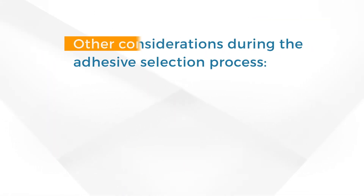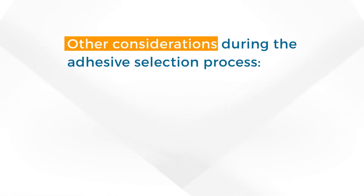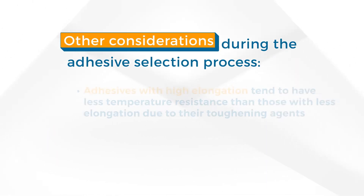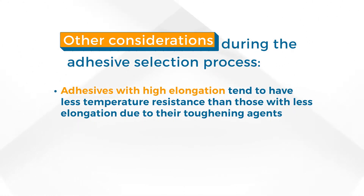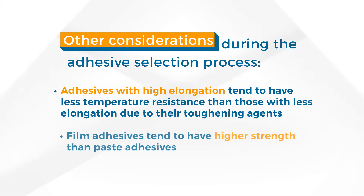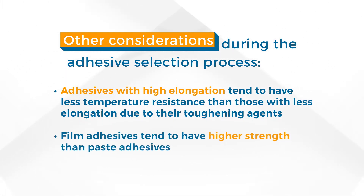Other considerations during the adhesive selection process: adhesives with high elongation tend to have less temperature resistance than those with less elongation, due to their toughening agents. Film adhesives tend to have higher strength than paste adhesives.